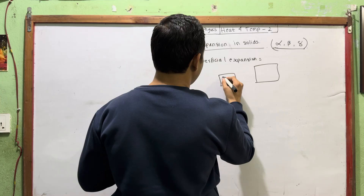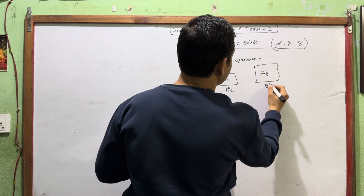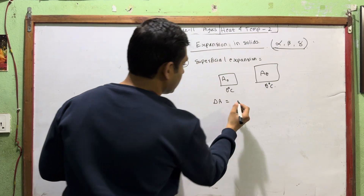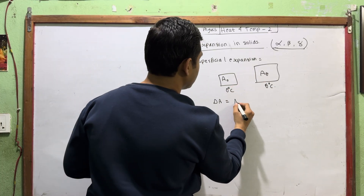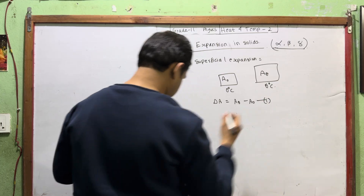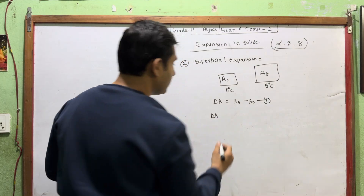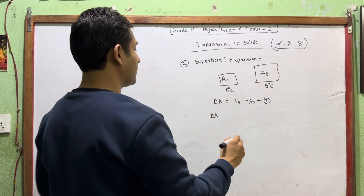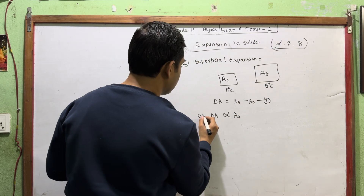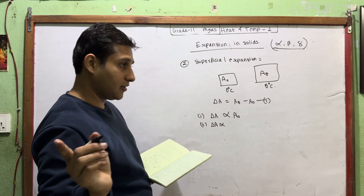We have A₀ at 0 degrees Celsius. Now there is a change in area: this is the final area minus the initial area, so ΔA = A_θ − A₀. Number 1: the change in area is directly proportional to the original area A₀. Number 2: the change in area is directly proportional to the change in temperature.